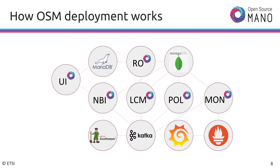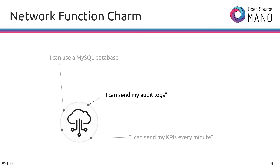If you look at OSM and how it is deployed, it can be deployed with charms, which are basically a way to compose different components and relate them. The same familiar way of deployment can be used for additional functions of your network function. A charm is basically a way to model the complexity of the deployment of an application — a piece of code that informs others in its surroundings what it can do. For example, a network function charm would say it's using an SQL database, can send KPIs at a certain frequency, and can send its own audit logs.